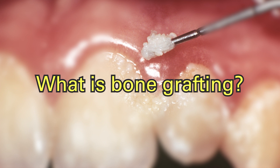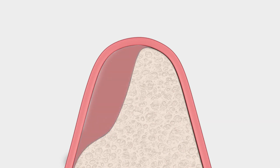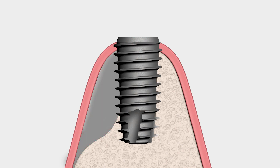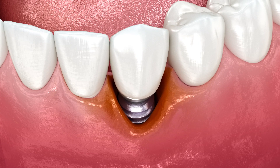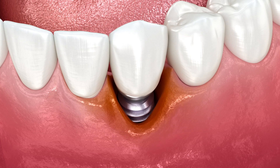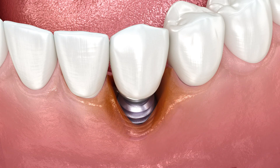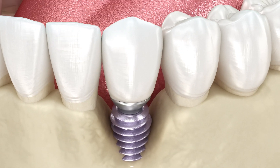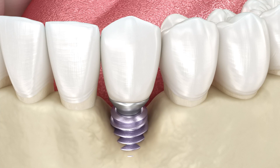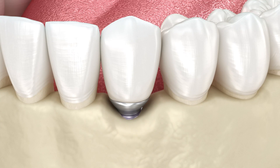What is bone grafting? In order to place dental implants, you need to have enough gum bone to accommodate them. If an implant is placed when the gum bone is weak, it may not be able to integrate well into the bone, limiting its ability to stay firmly in place. If you don't have enough bone, you can have a dental implant placed with graft material to create new bone, which is called a bone graft with implant treatment.